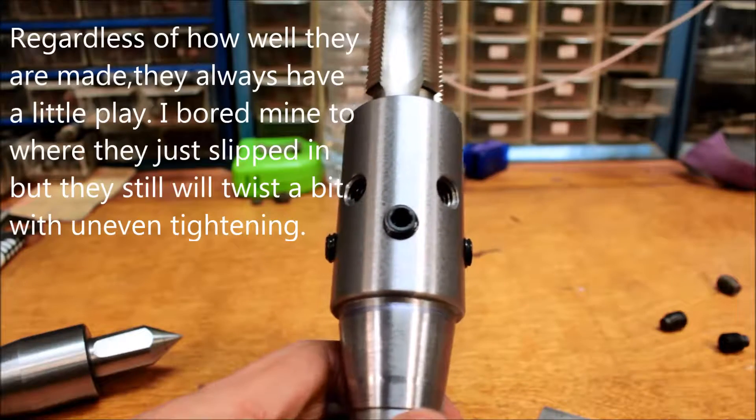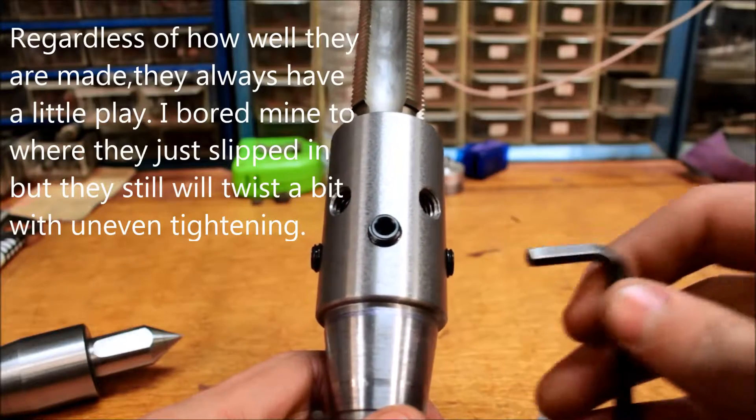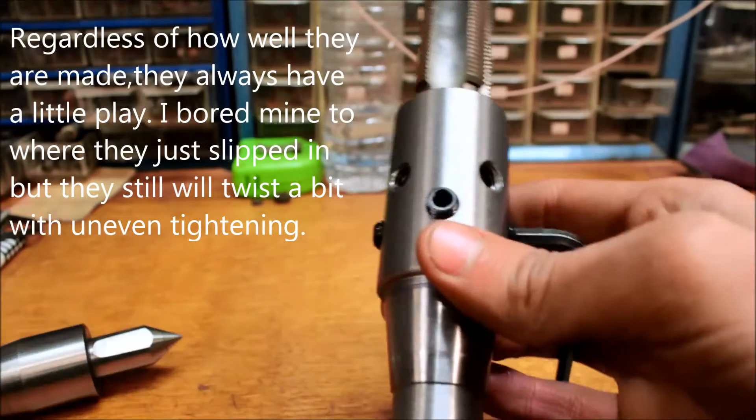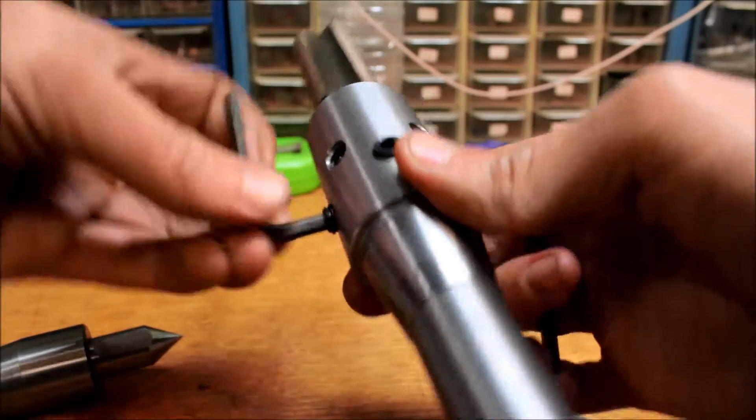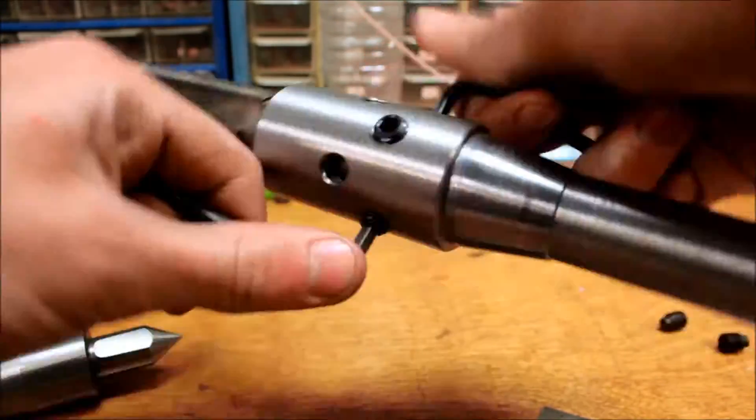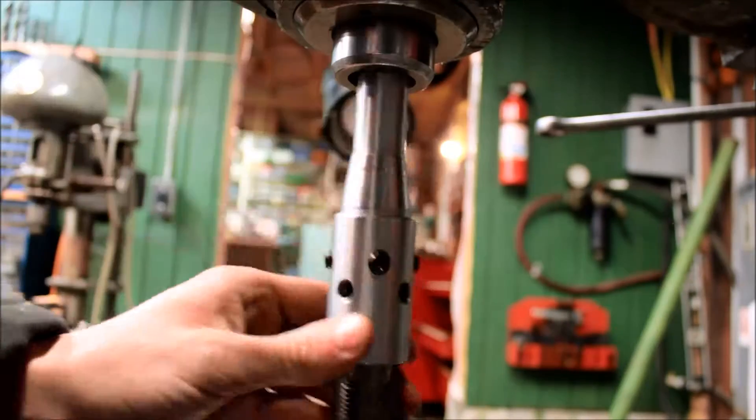The bushings are never that precisely made, so if you just crank down on one side you're actually gonna shift the tap over and it won't run true. I think the best method to get it equal is to put an Allen wrench on each side and then just tighten against each other.